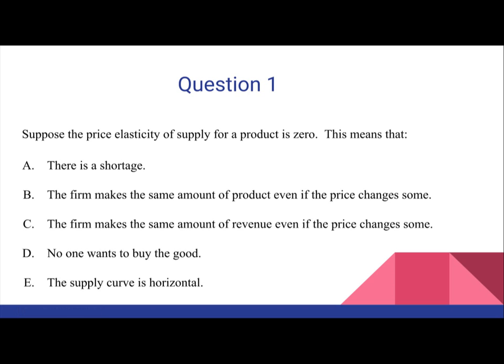Question one: suppose the price elasticity of supply for a product is zero. This means that — A, there is a shortage; B, the firm makes the same amount of product even if the price changes some; C, the firm makes the same amount of revenue even if the price changes some; D, no one wants to buy the good; E, the supply curve is horizontal.